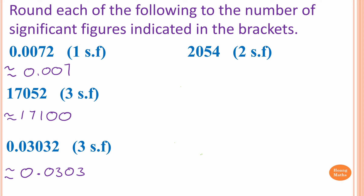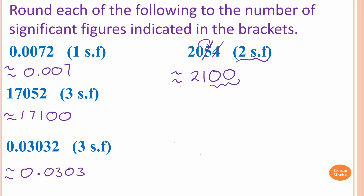Next one: we have 1, 2, 3, 4 significant figures, and we only want 2 significant figures — digits 2 and 0. Before writing that, we check the number after 0, which is 5. From halfway onward we round up, so instead of 20 we write 21. The remaining digits become 0, giving 2,100. That is 2 significant figures, because zeros at the end of a whole number are not significant.